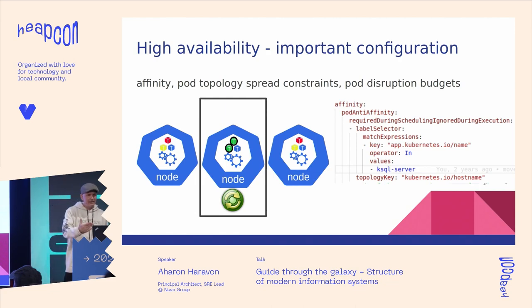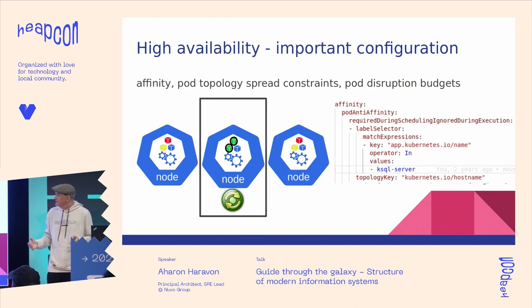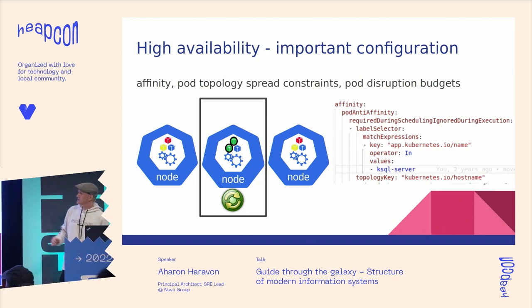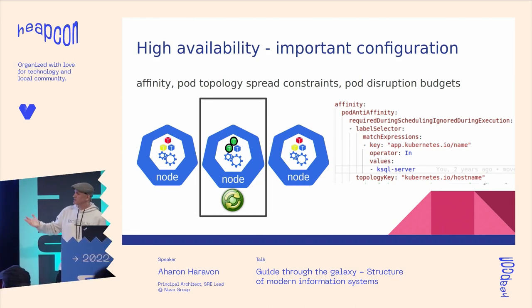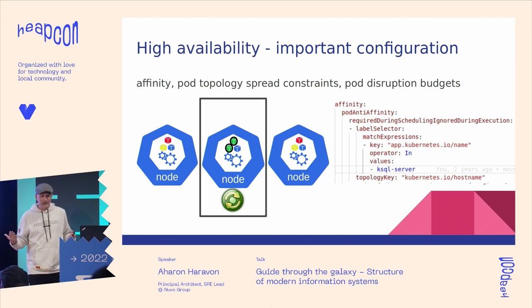To ensure the high availability of a cloud-native application, we need to make sure to configure the affinity, pod topology spread constraints, and pod disruption budgets. If we fail to configure the affinity and only configure the replica numbers to two, we may end up running both pods on the same node, and therefore still have a non-reliable single point of failure.